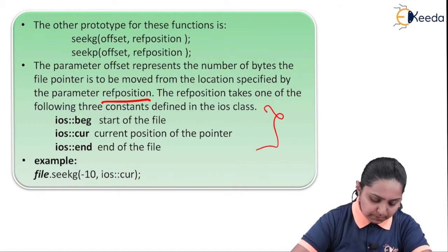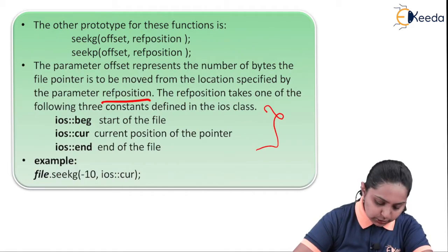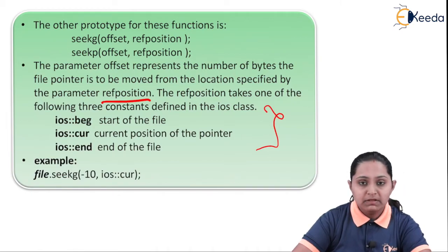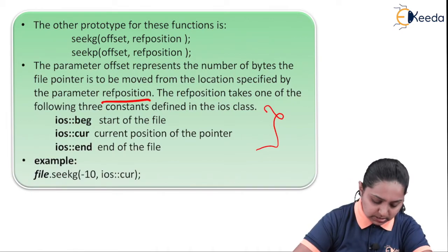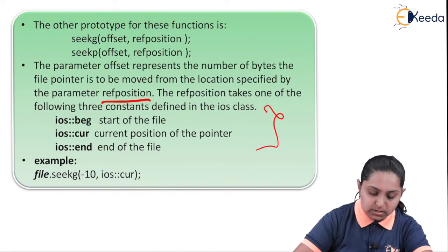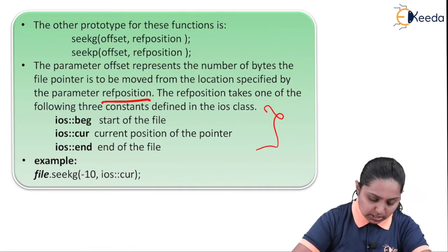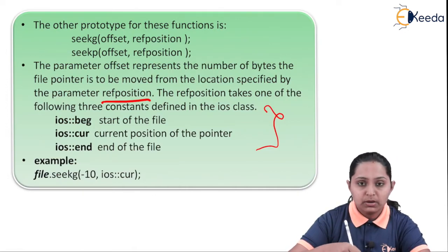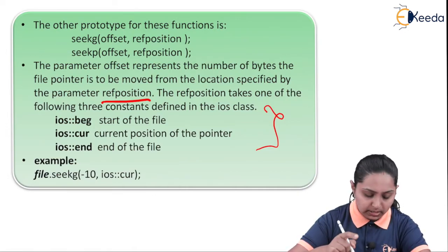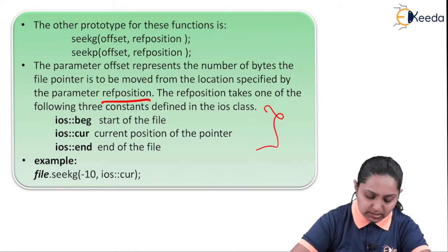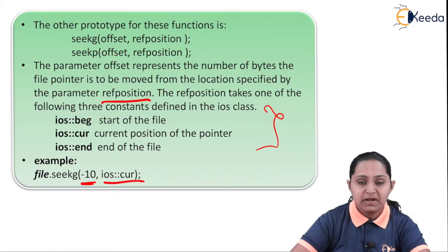For example, file.seekg(-10, ios::cur). With the help of this, we are using seekg to get the pointer location from minus 10 bytes from the current file pointer position. Thank you.